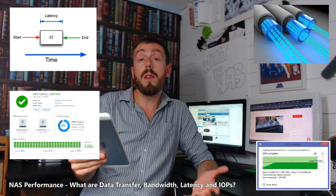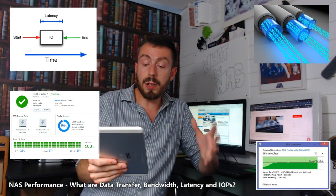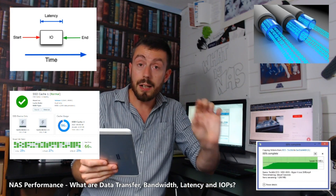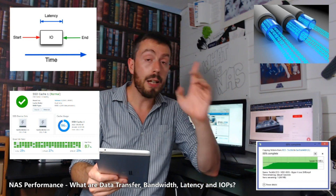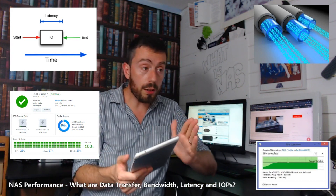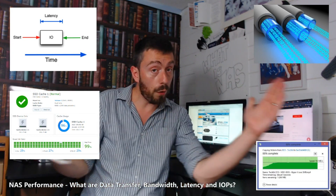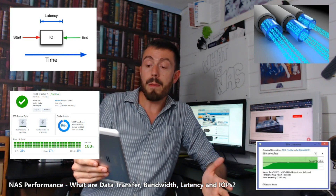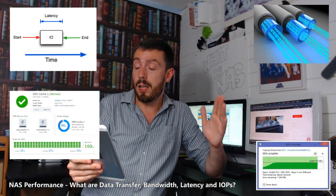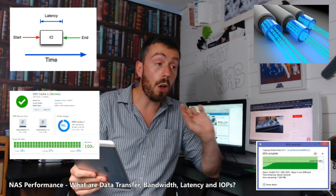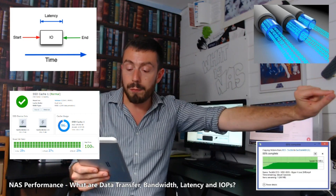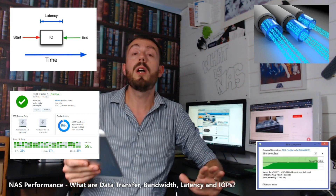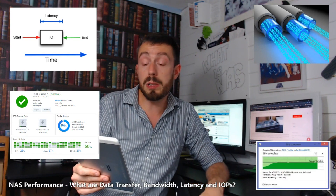In terms of our motorway analogy, think of IOPS as the number of cars able to pass through a given point in one second. The more cars that can go through that given point — not the width, but the given point — that is your IOPS. Typically, IOPS equates to one second divided by the average seek time for a small chunk of information versus the average latency, and between those two you find out your IOPS speed.